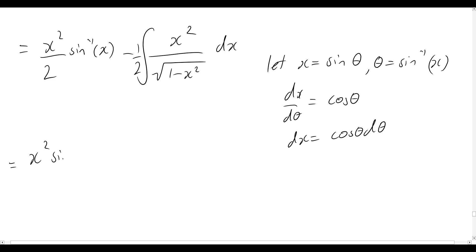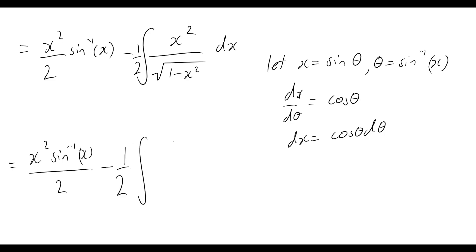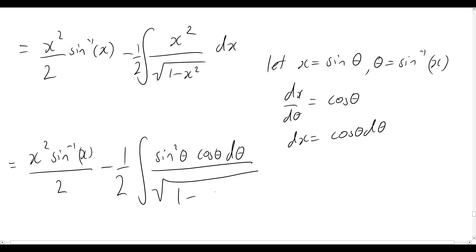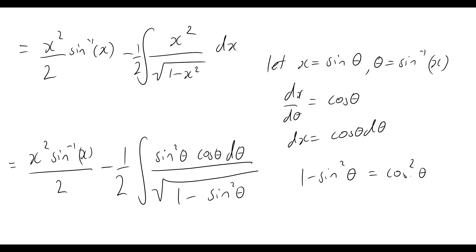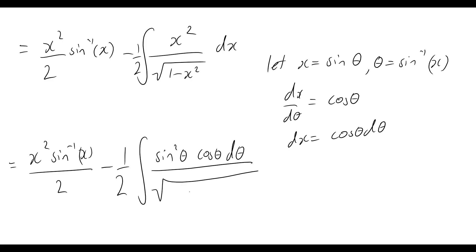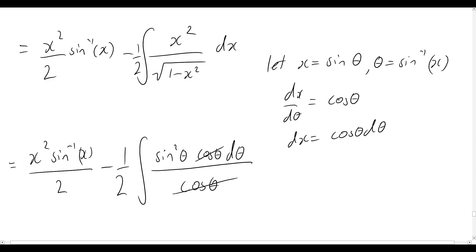Applying these substitutions: we still have x squared over two times sine inverse of x, and now minus one half times the integral of — x squared becomes sine squared theta, dx becomes cos(θ) dθ, and the denominator square root of one minus x squared becomes the square root of one minus sine squared theta, which equals the square root of cos squared theta, which is just cos theta. The cos theta in the numerator and denominator cancel out.